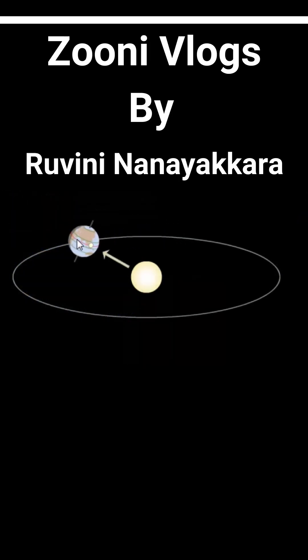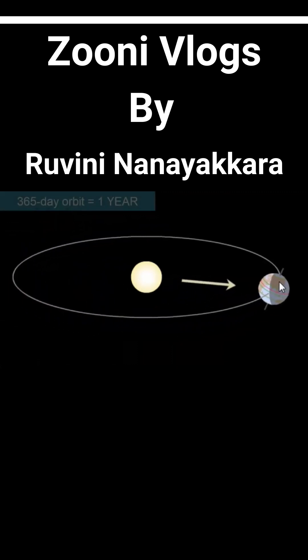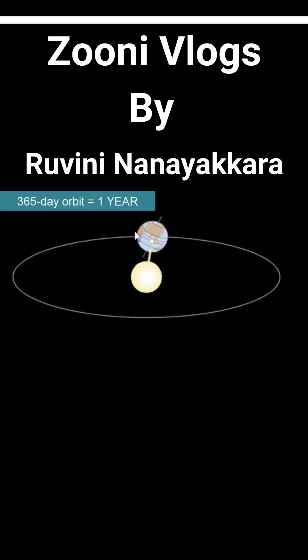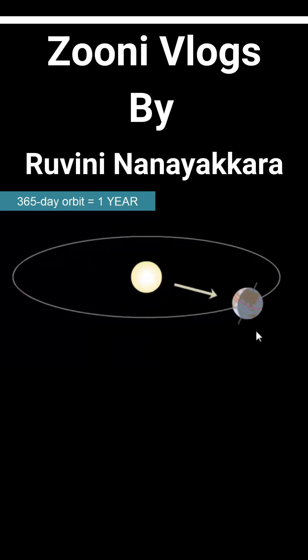The earth moves around the sun — this is called revolution. It takes 365 days, that means one year. The journey around the sun we call revolution.